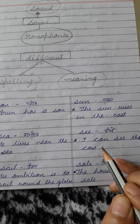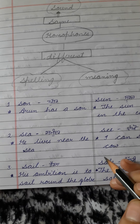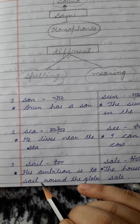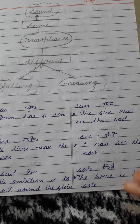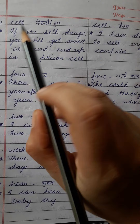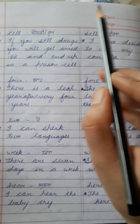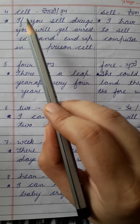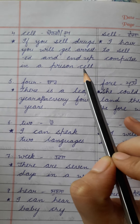I can see that cow. Next is S-A-I-L 'sail' and S-A-L-E 'sale'. His ambition is to sail round the globe. The house is for sale. C-E-L-L 'cell' means room or quarters. S-E-L-L 'sell' means wichna. If you sell drugs, you will get arrested and end up in a prison cell.